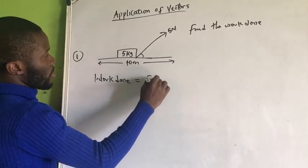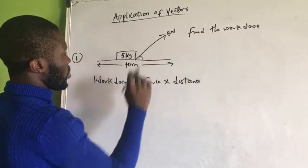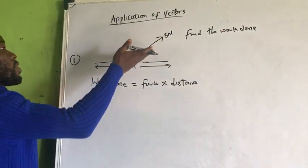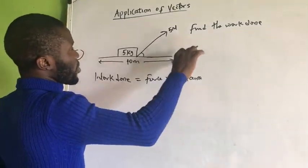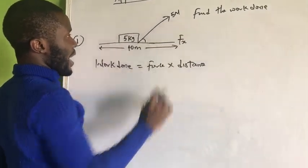Work done is force times distance. Now, what is the force? The force we are talking about here is not the 5 meter force. It is actually the force along the x axis. So, we can say this is f sub x.